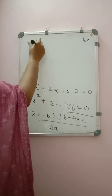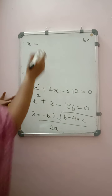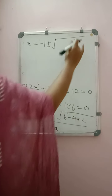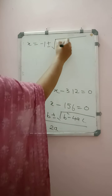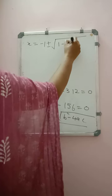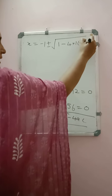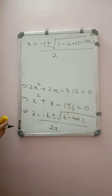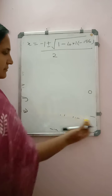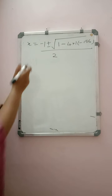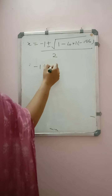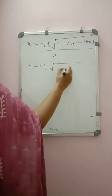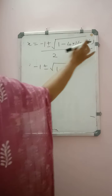We are going to substitute the values. x = −b, so it will be equal to −1 ± √(b² − 4ac) / 2a. That gives us −1 ± √(1 − 4 × 1 × (−156)) / 2.